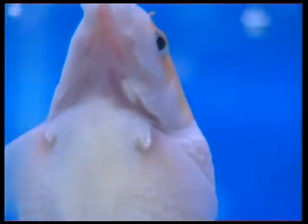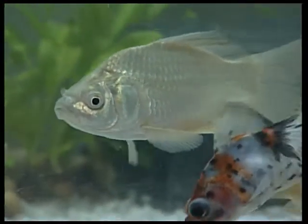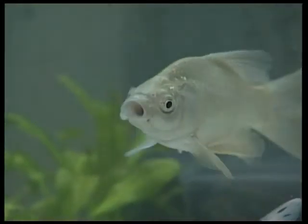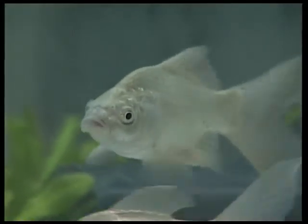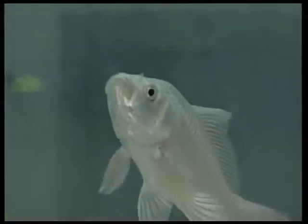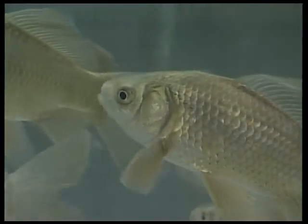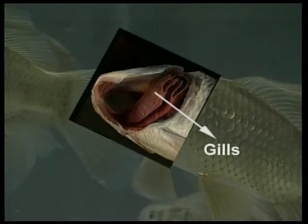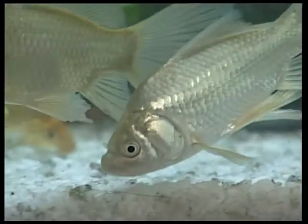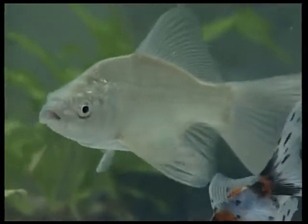Fish have a different kind of respiratory system. Fish live underwater and can hardly survive outside water. They use the air dissolved in water. Notice that fish gulp all the time — this water continuously washes over the gills. The gills contain a leaf-like structure called gill lamella, which takes up the oxygen dissolved in water.